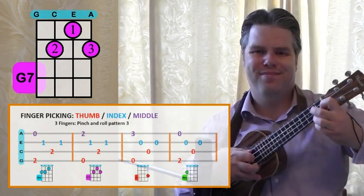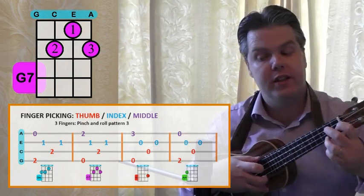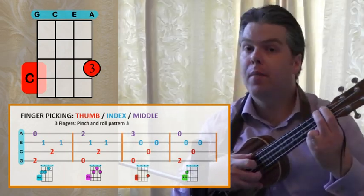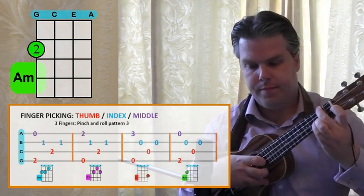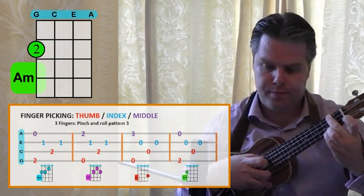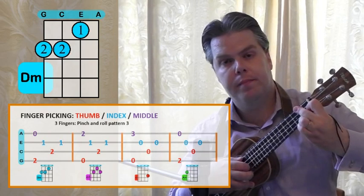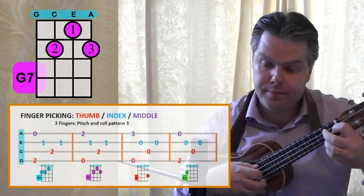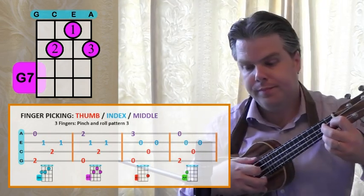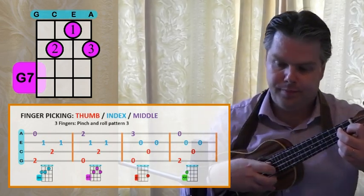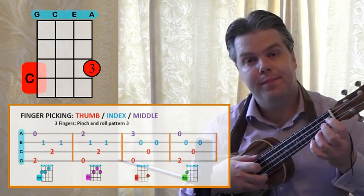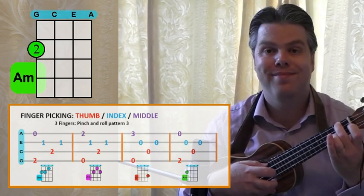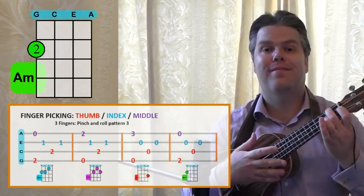Then we've got the C on the next one, and then the A minor. Back to the D minor, to the G7, and the C, and the A minor. D minor.